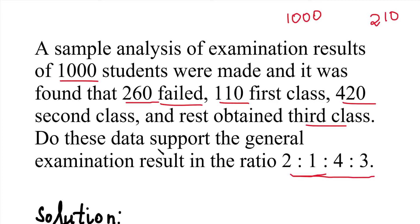The question is: do these data support the general examination result in the ratio 2:1:4:3? That is, in the 4 categories of students — fail, 1st class, 2nd class, 3rd class — the ratio is 2:1:4:3.